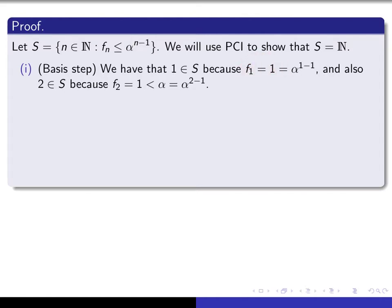We also have to verify that 2 is in S. In other words, F sub 2 is less than or equal to alpha. Well, now we're going to use the fact that alpha is roughly around 1.6 and F sub 2 is 1. And so using that fact, we know that F sub 2 is smaller than alpha to the 2 minus 1 because 1 is smaller than alpha.